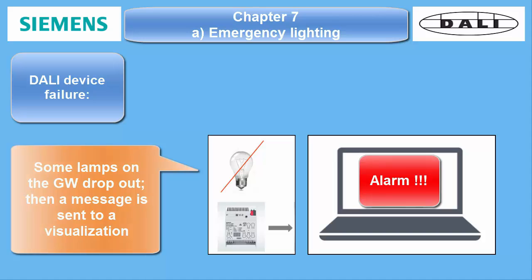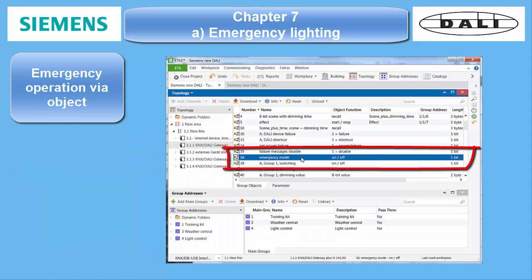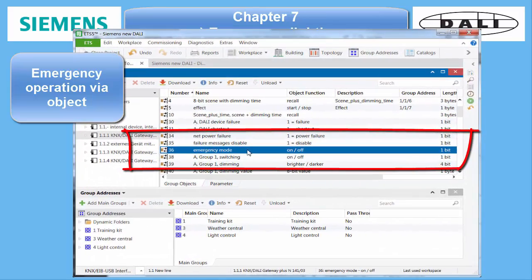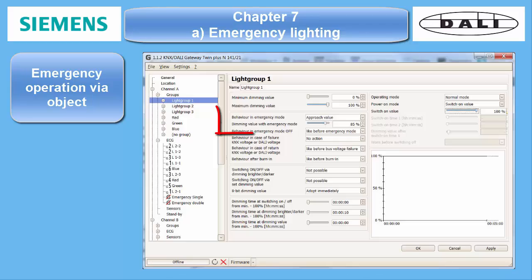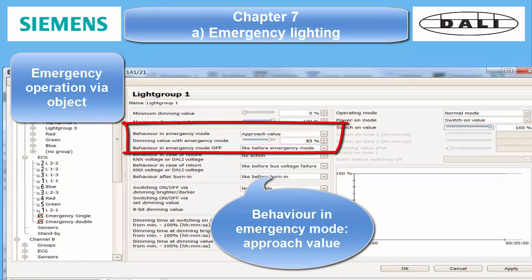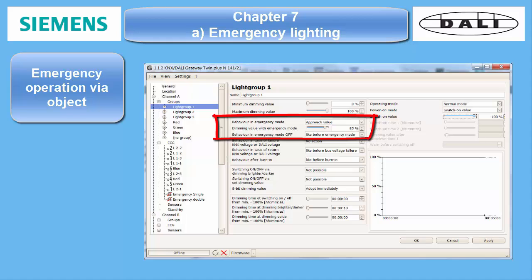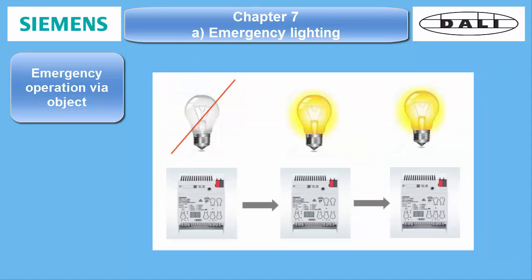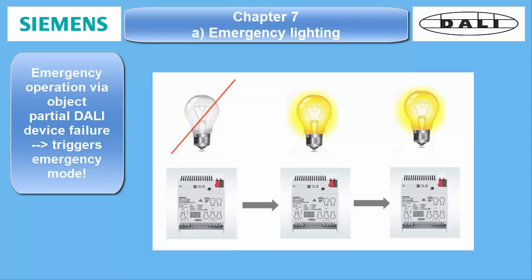Emergency operation and synchronization. All Siemens DALI gateways possess a central communication object: Emergency operation, number 36. Together with the parameter setting of either groups or ECG behavior in emergency mode, it is possible to set all emergency luminaires into a certain emergency operation level at the same time. As a use case, the partial device failure message can be used to trigger this object.